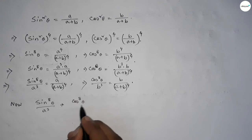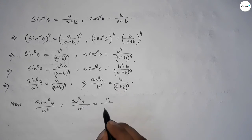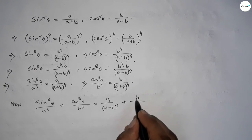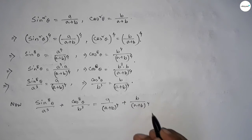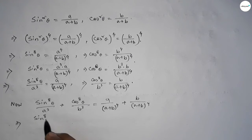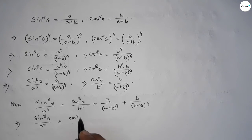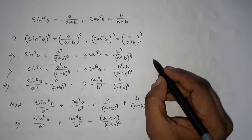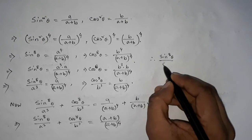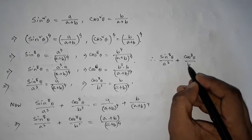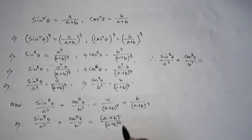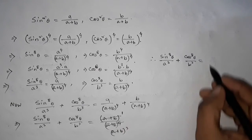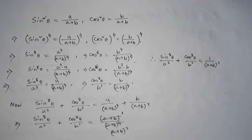Adding both: sin⁸θ/a³ + cos⁸θ/b³ = a/(a+b)⁴ + b/(a+b)⁴ = (a+b)/(a+b)⁴. Cancelling (a+b) up and down: this equals 1/(a+b)³. This is proved.